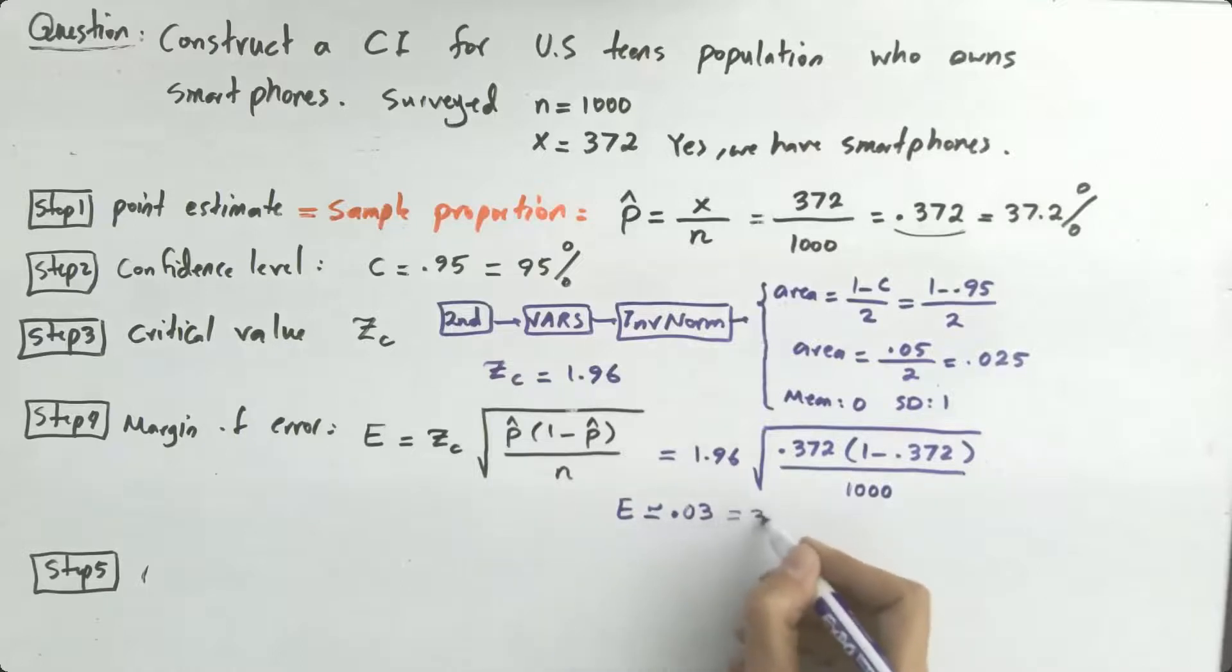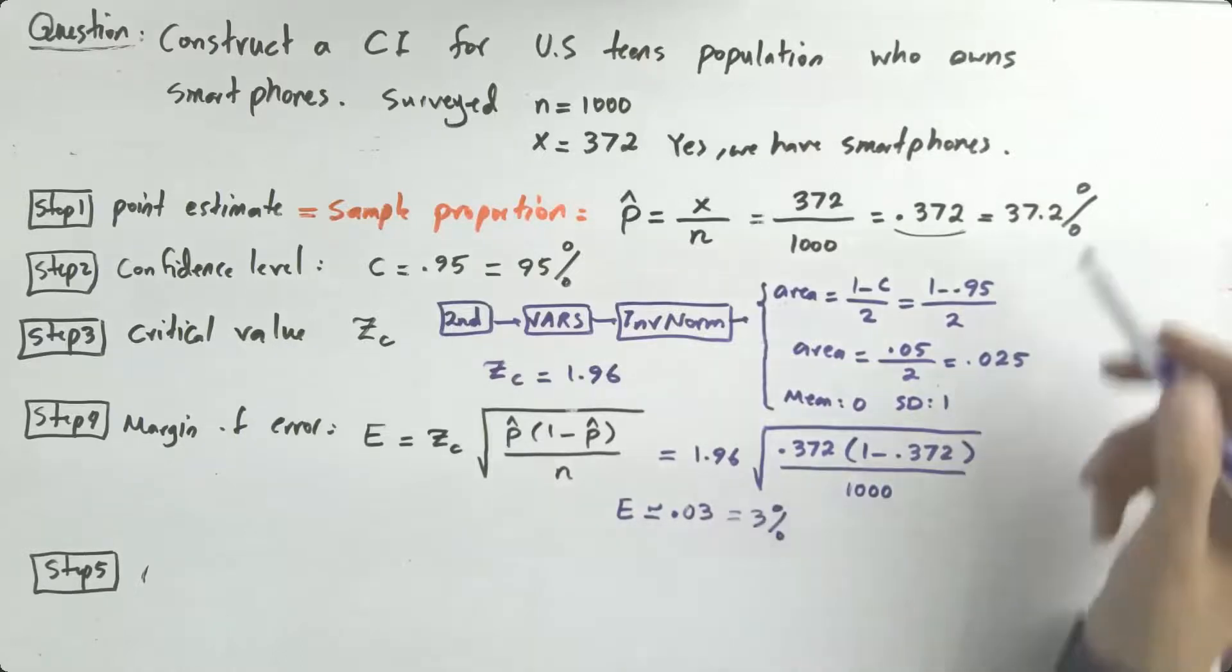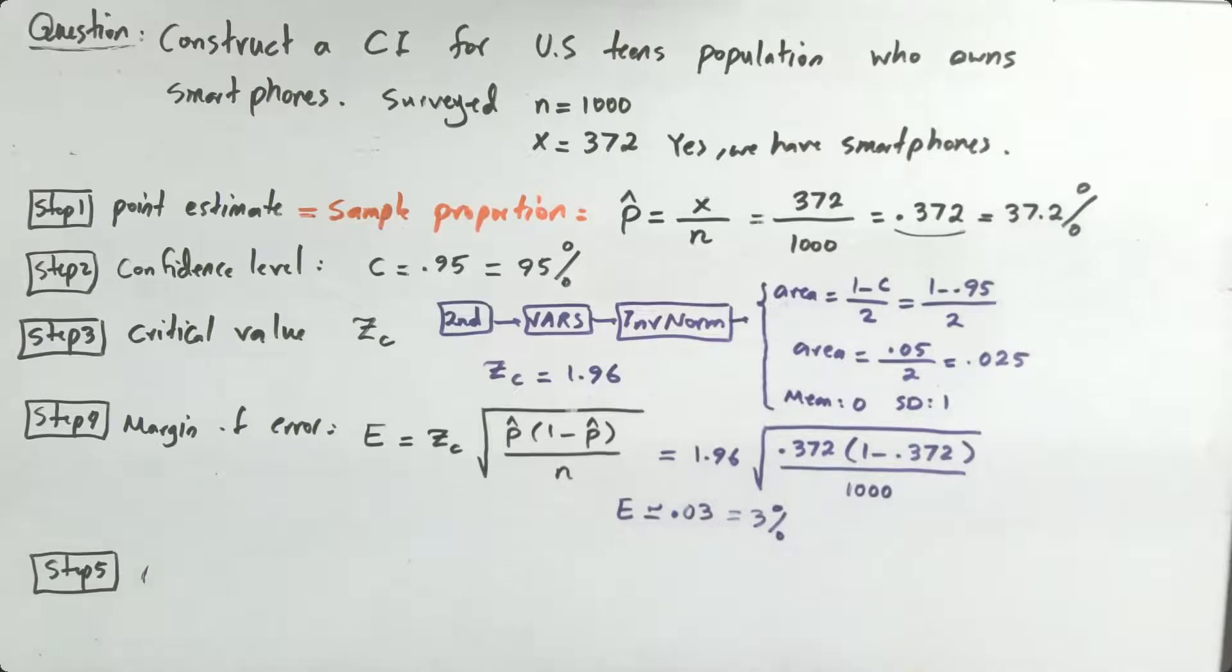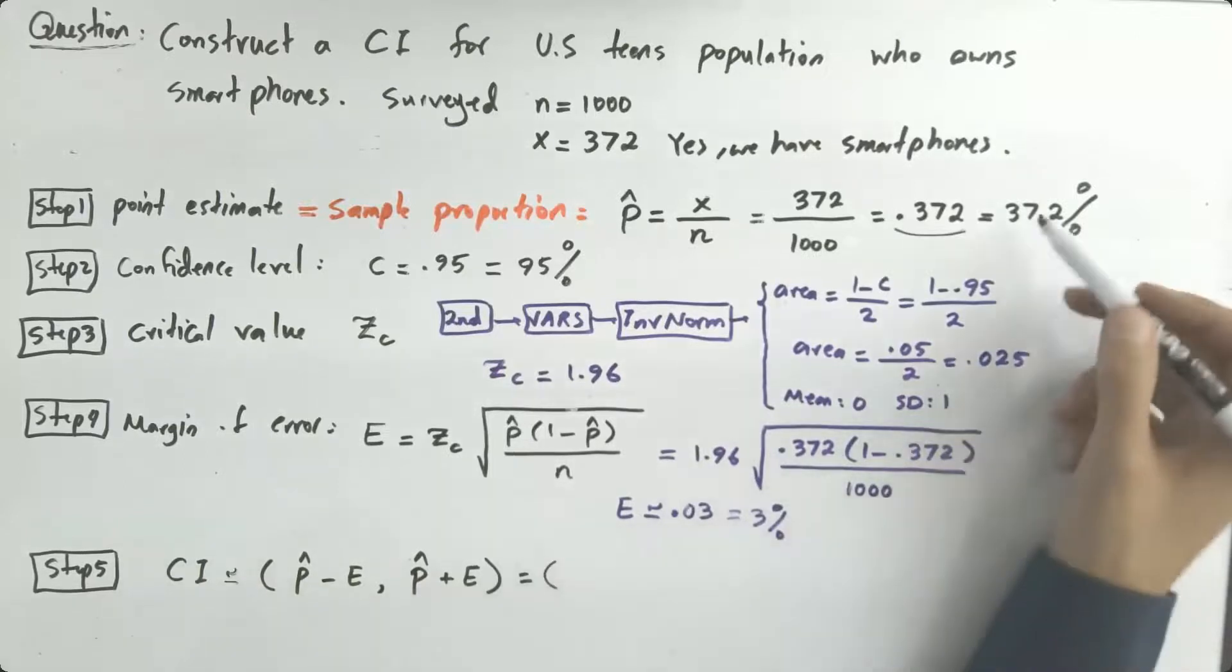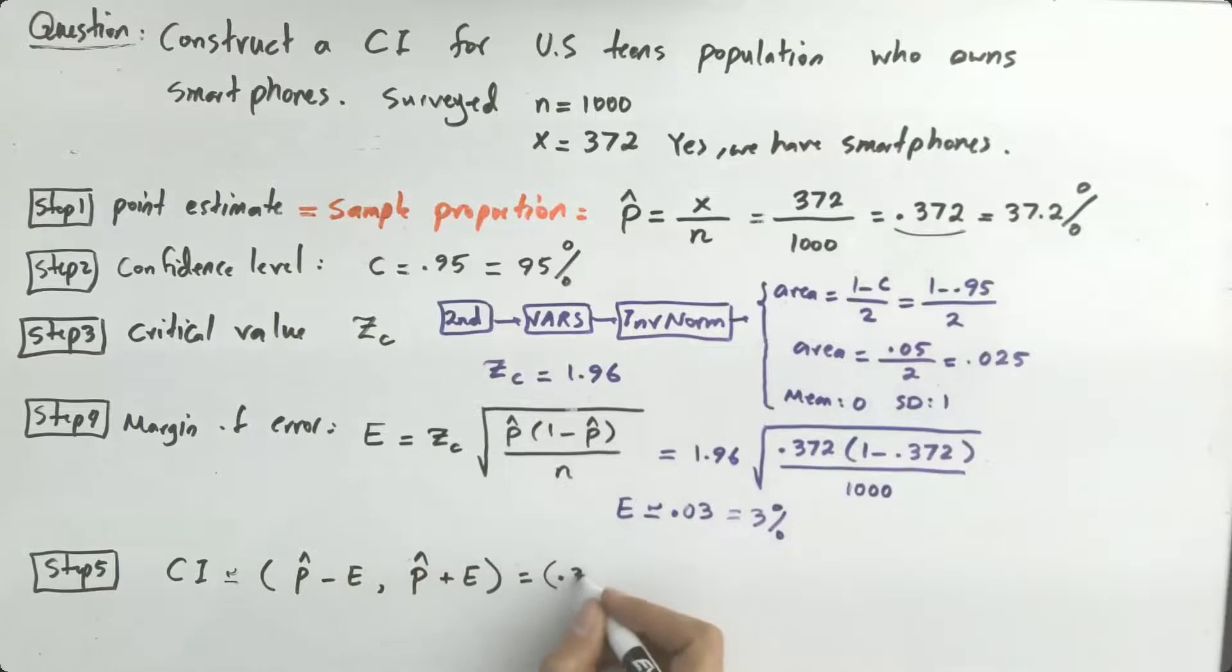The margin of error is approximately 0.03, approximately 3 percent. 3 percent. Remember that this is the distance. This is your point estimate and this is the distance. So the confidence interval is equal to, let us open the parenthesis, p hat minus margin of error, comma, p hat plus the margin